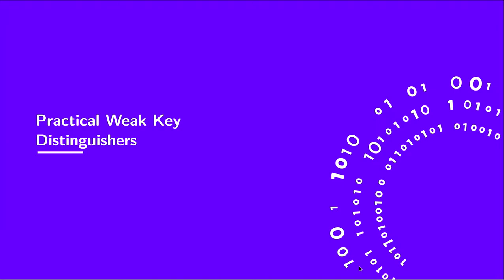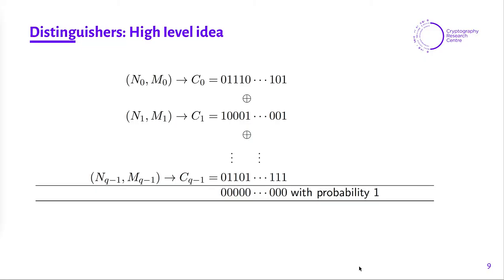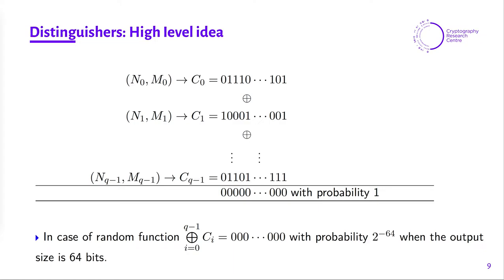Now let's look into how we came up with these distinguishers. First, a high-level description of what we are looking for. Let's say we have input nonce n0 and message m0 and we receive ciphertext c0. We repeat this for q queries where the nonces are distinct and obtain their corresponding ciphertexts, then XOR-sum all the ciphertexts. We are checking whether the sum of all ciphertexts equals zero with probability one. If ASCON's output behaves like a random function, this probability should be 2^-64, not 1.